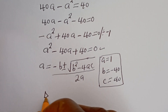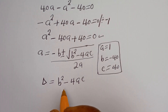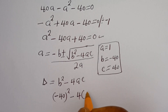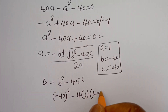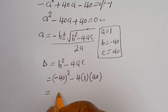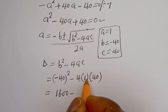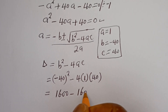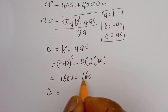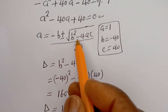The discriminant D equals b squared minus 4ac. That is (minus 40) squared minus 4 times 1 times 40, which equals 1600 minus 160. So D is equal to 1440.